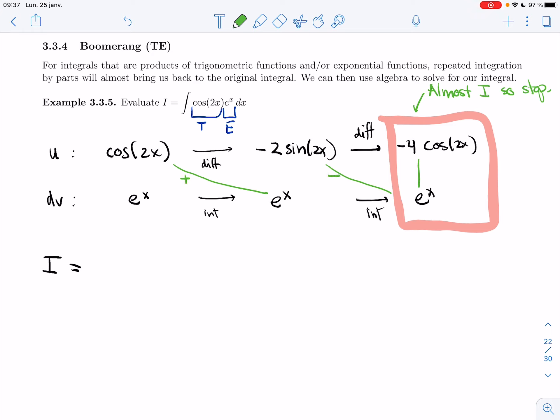So I'm told to take these diagonals with alternating terms, and then this integral, and I have plus, minus, so I'm going to have another plus. So I get cos(2x)e^x minus, minus 2sin(2x)e^x,